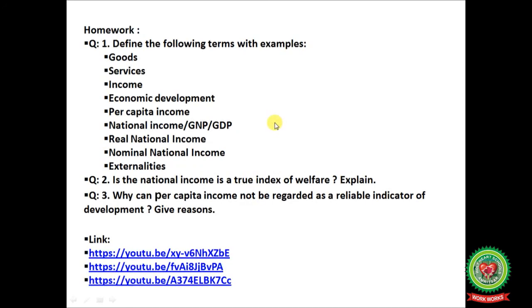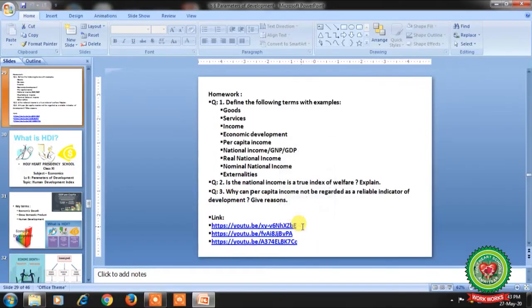Students, hope you have all understood the topic. Now it's time to note down the homework. Question 1: Define the following terms with examples — goods, services, income, economic development, per capita income, national income or GNP or GDP, real national income, nominal national income, externalities. Question 2: Is national income a true index of welfare? Question 3: Why can per capita income not be regarded as a reliable indicator of development? Give reasons. Please go through the links on YouTube for better understanding and complete your notes. Thank you for listening.